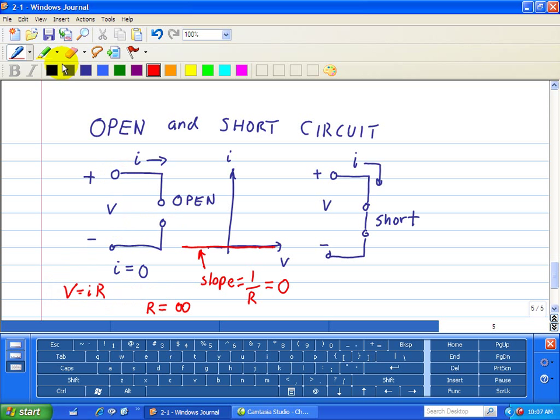Now let's do the same thing associated with the short circuit. We're going to use the i-V characteristics of i and V, and we have current going through here. But the voltage, since this acts like a piece of wire, there's really no voltage drop across here because there's no resistance.